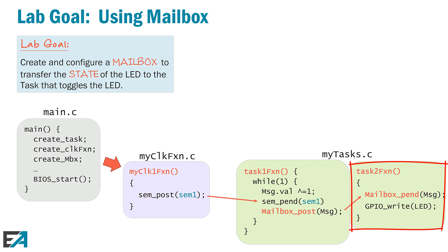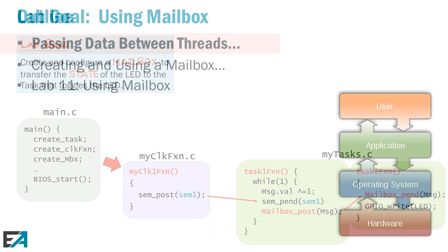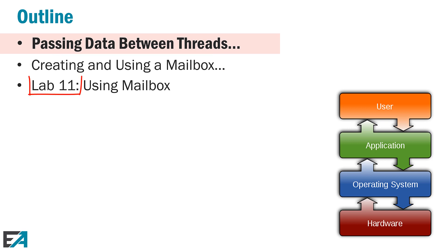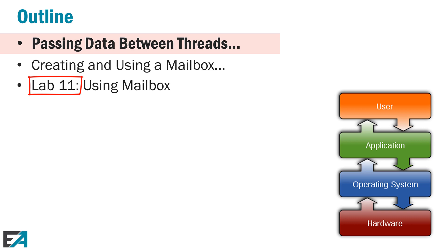So that's where we're headed with this chapter. With semaphores, we're just synchronizing — just saying 'ready' — but with a mailbox, we're actually moving data. As far as the outline goes, we'll talk about basic ways to pass data between threads, look at how a mailbox works, then create one dynamically. At the end, we'll do Lab 11, where we actually get to play with the mailbox and make it so.